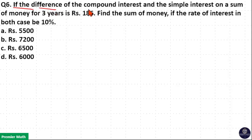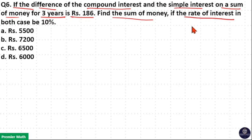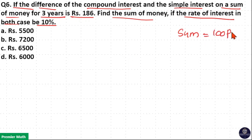If the difference of the compound interest and simple interest on a sum of money for 3 years is rupees 196, find the sum of money if the rate of interest in both cases is 10%. Let us consider the sum as 100 parts. If you find the value of 1 part, then sum is equal to 100 into value of 1 part. This is the concept of parts here.